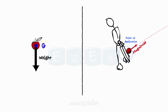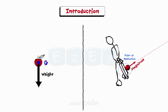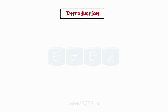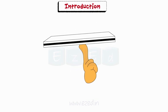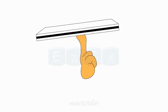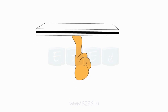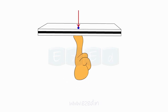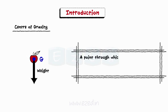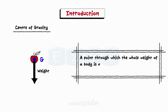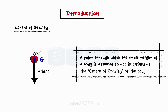The location of the center of gravity becomes important while dealing with the weight force. Consider you trying to balance a notebook on your finger. You try to balance the book at different positions along its surface, but at only one point can the book be perfectly balanced. This point is called as the center of gravity of the book. A point through which the whole weight of a body is assumed to act is defined as the center of gravity of the body.